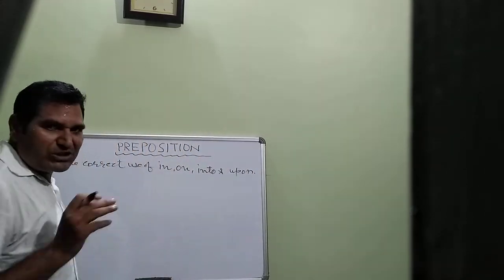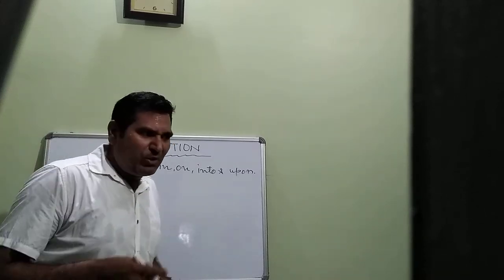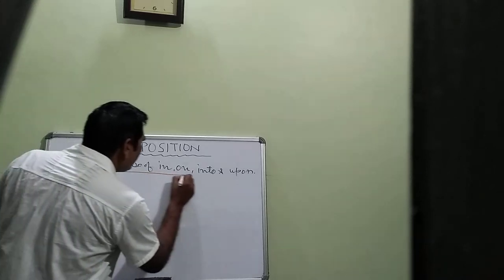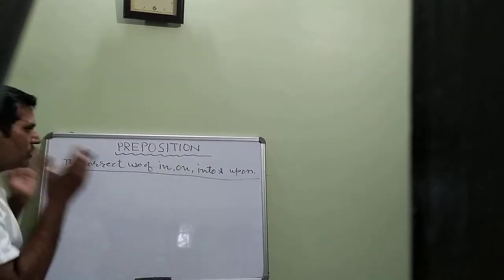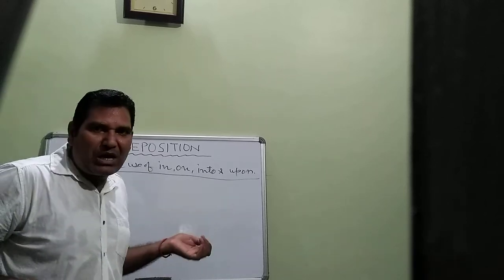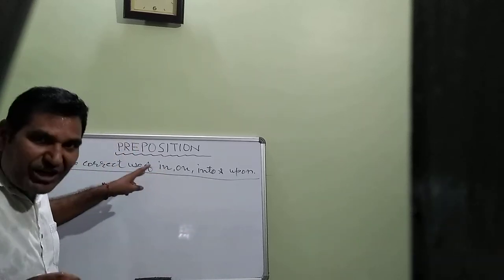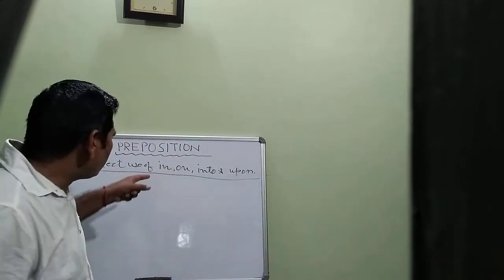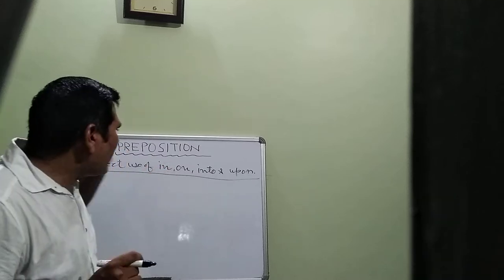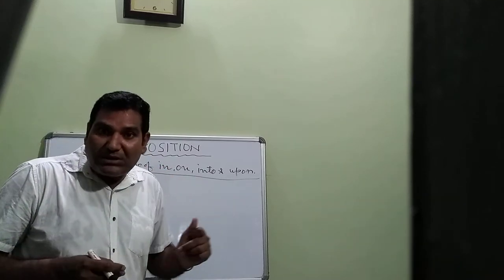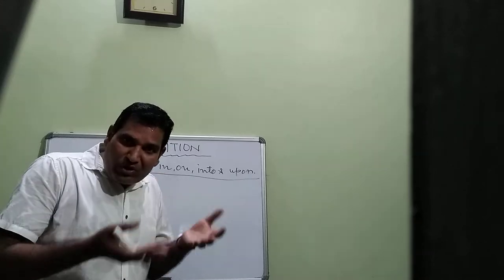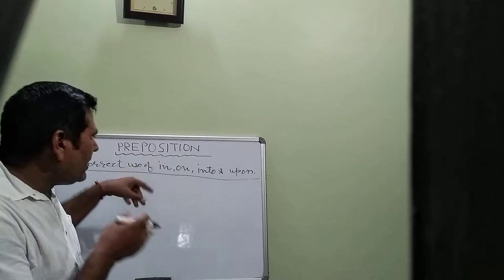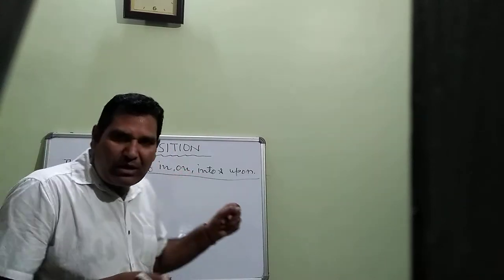Most students make mistakes with these four prepositions. The basic thing is: two of them are static position prepositions and two are movement position prepositions. The static positions are in and on, while into and upon are the movement positions.